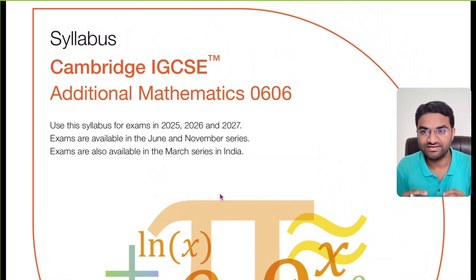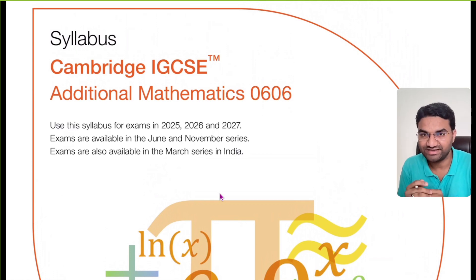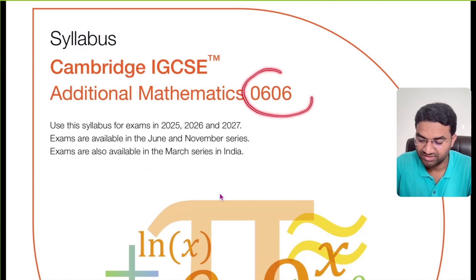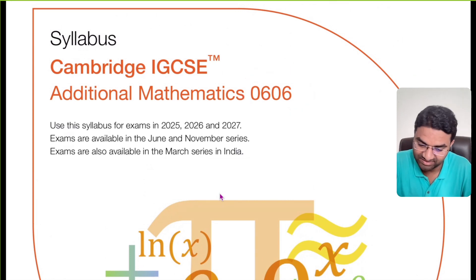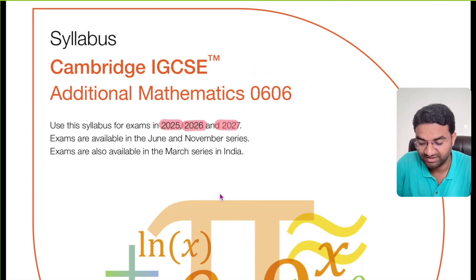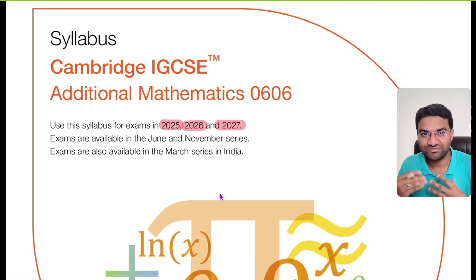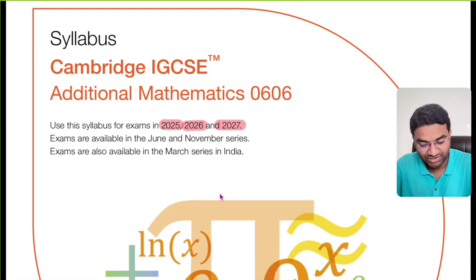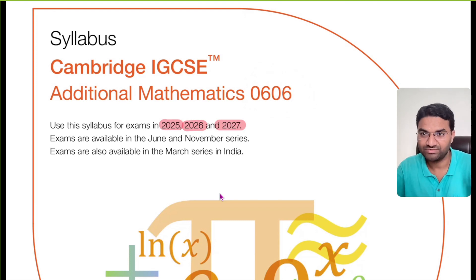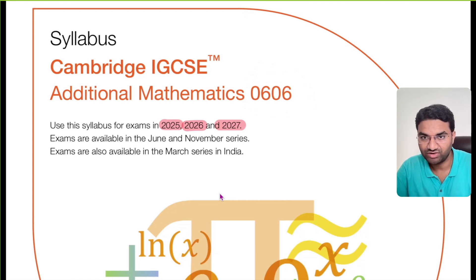Welcome to Vision Classes, a platform for IGCSE and GCSE students around the globe. Today we discuss the syllabus content for Additional Mathematics, paper code 0606. This syllabus covers the years 2025, 2026, and 2027. Exams are available in the June and November series, and also in March for students in India.